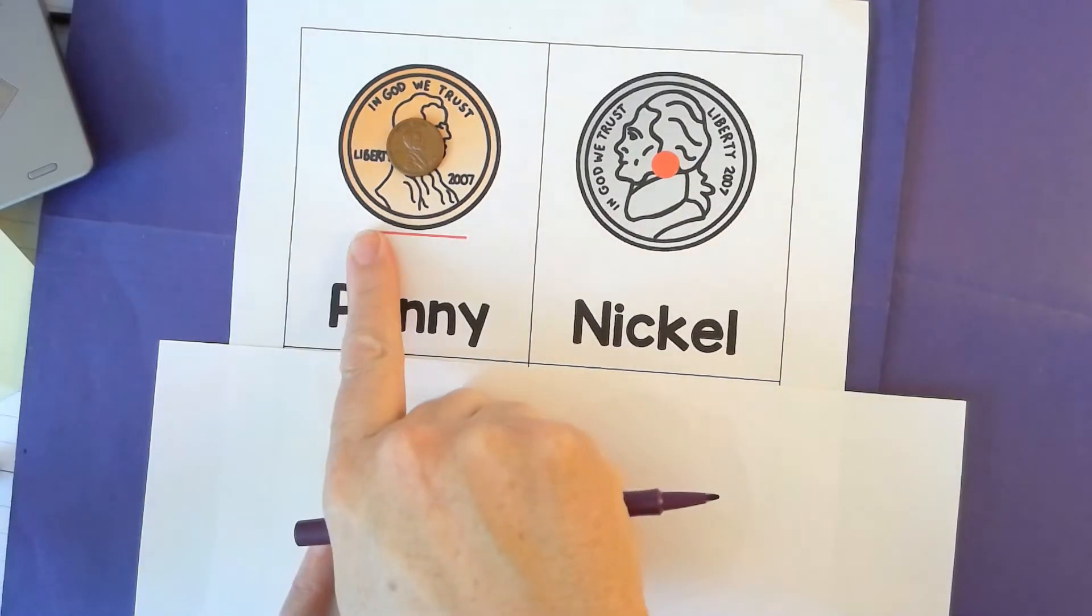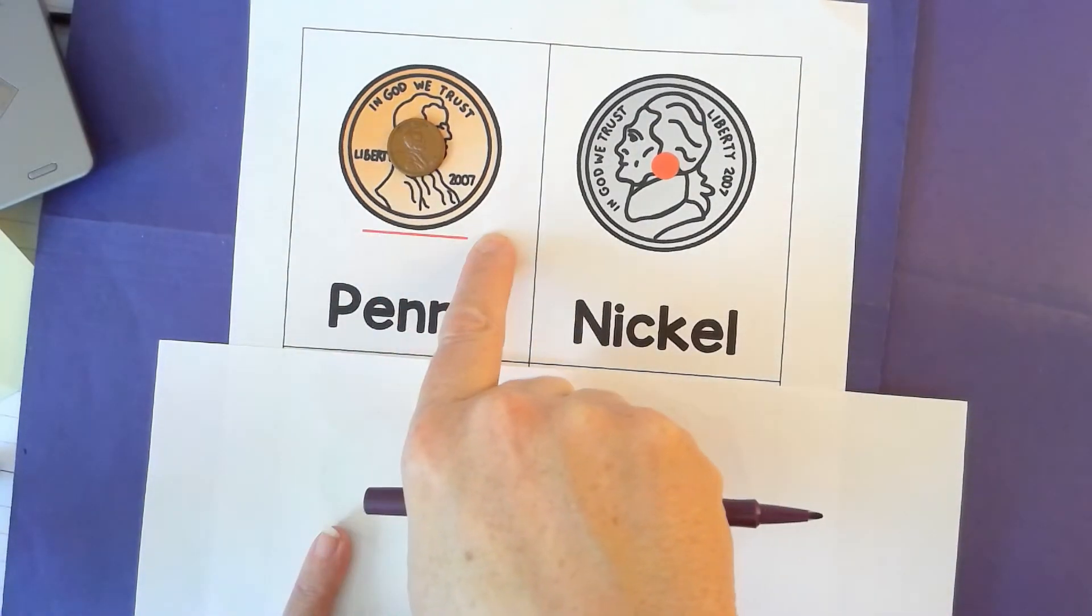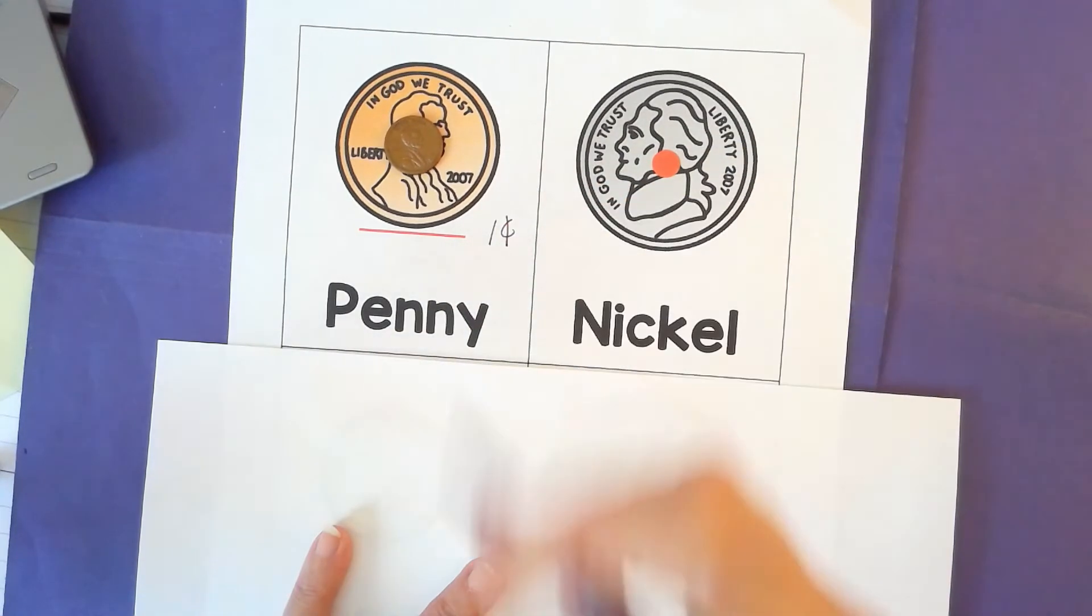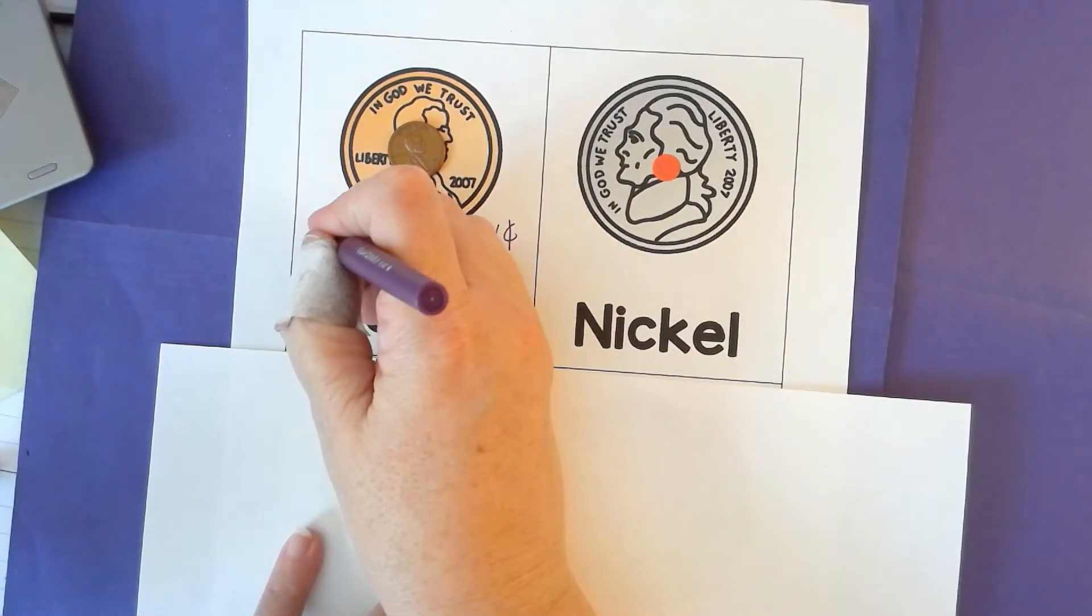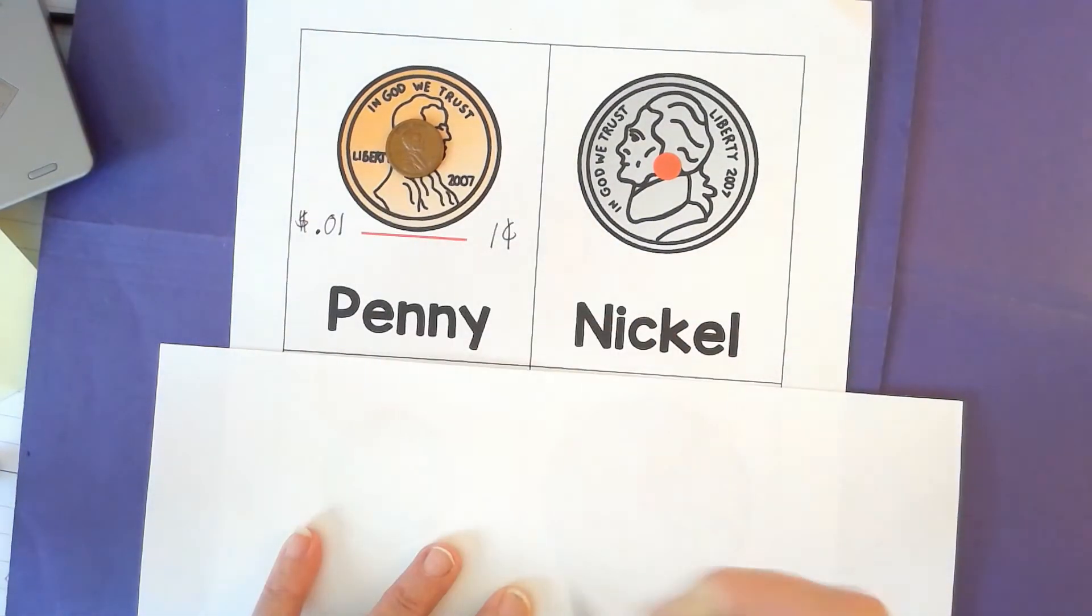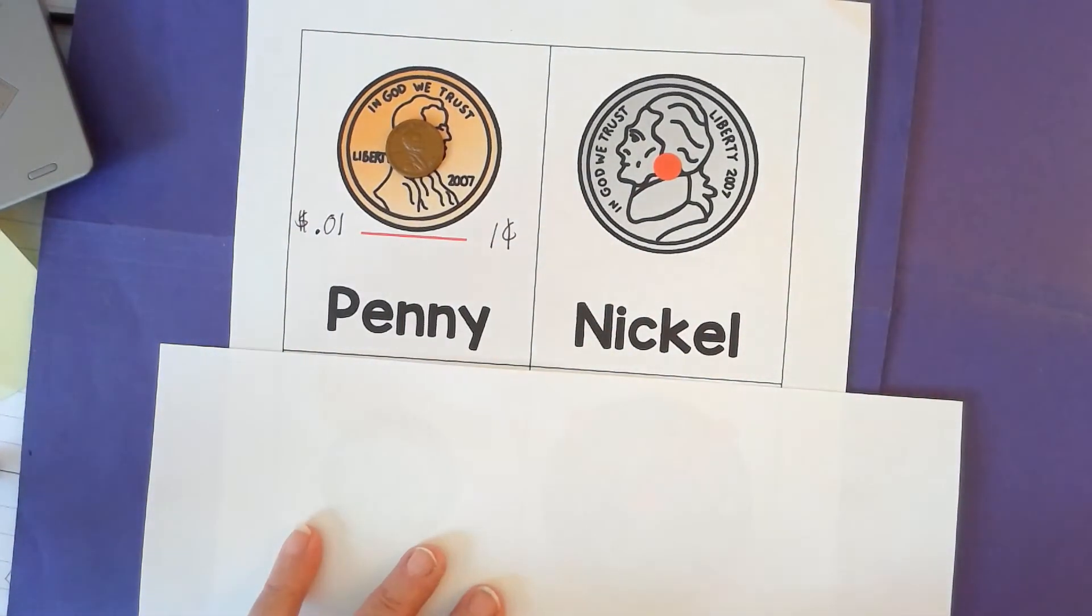How we do this with touch, using your finger, is we just say one. So this is worth one cent. Or another way to write it is one cent. So one.